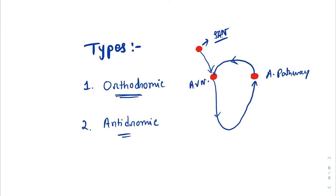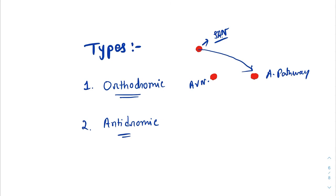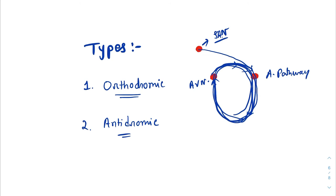Antidromic is just the opposite. In antidromic conduction, the impulse from the SA node travels down to the ventricle through the accessory pathway, then travels back upwards through the AV node, and then again to the accessory pathway — creating a loop between the AV node and the accessory pathway. This is known as antidromic conduction.